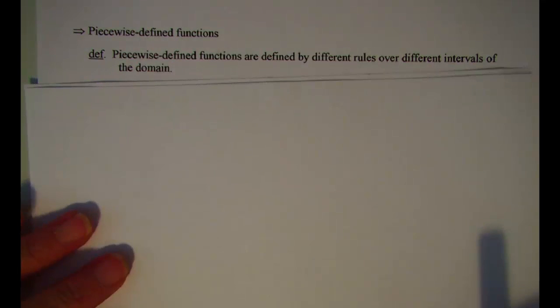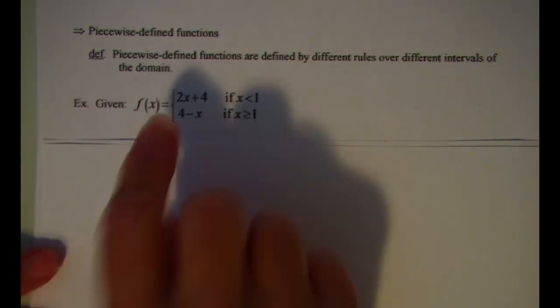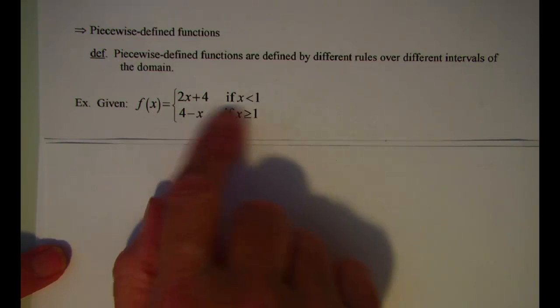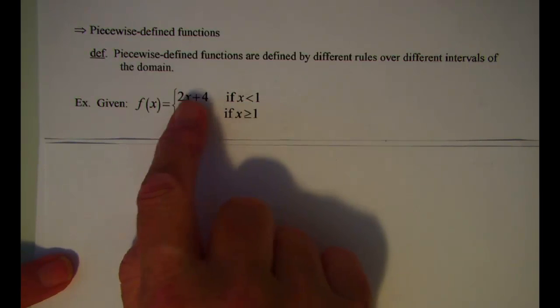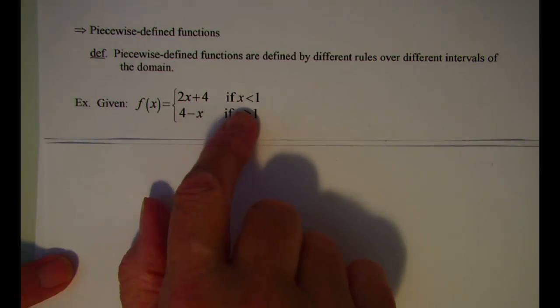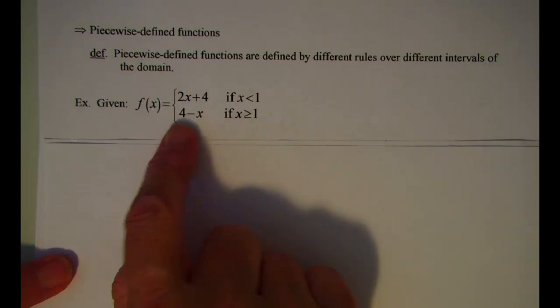An example: we have the function f, and for the domain elements less than 1, my y is defined to be y equals 2x plus 4, so I use the rule 2x plus 4 whenever x is less than 1. When x is greater than or equal to 1, I use the rule y equals 4 minus x.